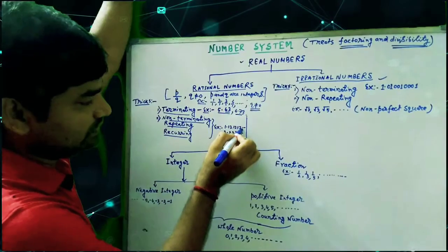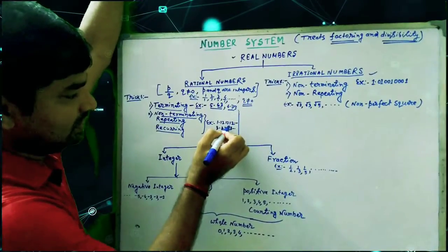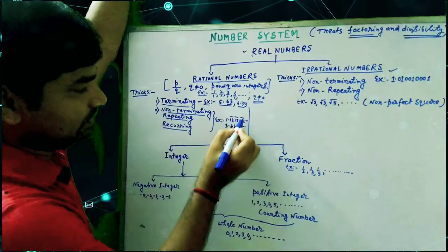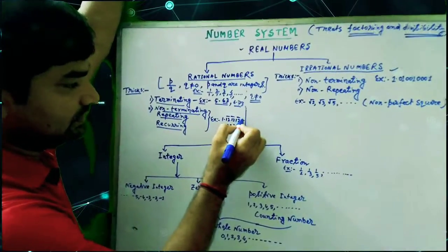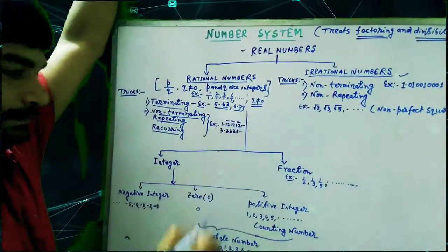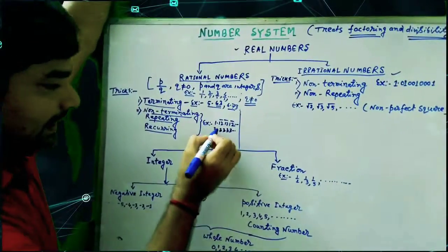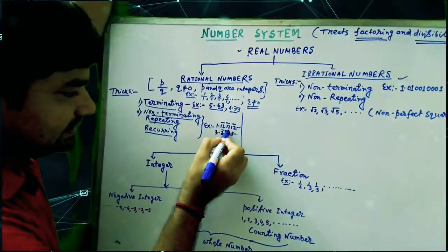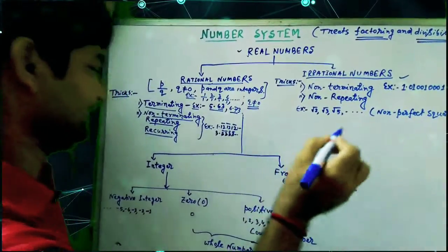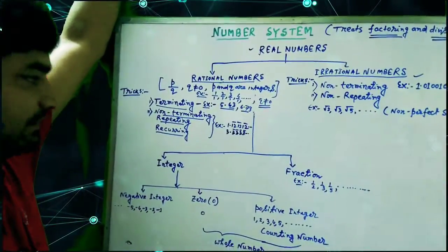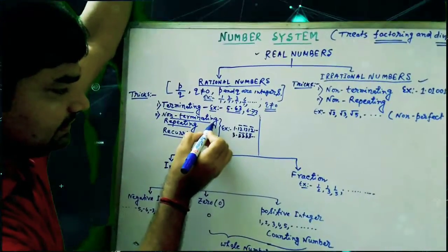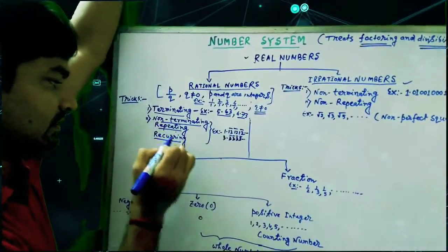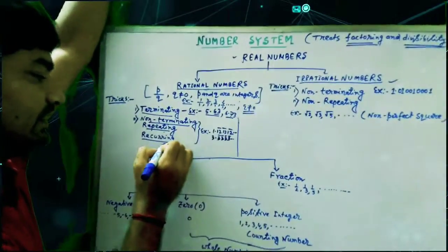Here, after the decimal point, 1212... is repeating, and 333... is repeating. That means non-terminating, repeating decimals are also called recurring decimals. These are rational numbers.